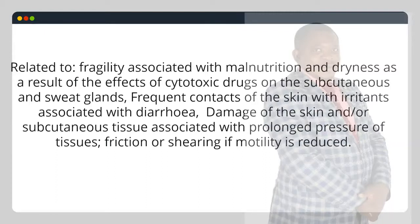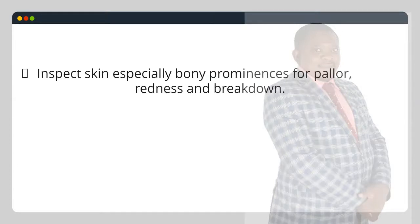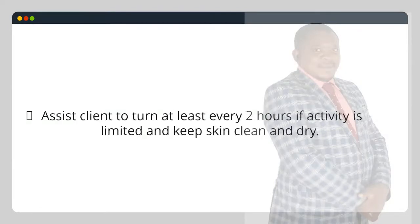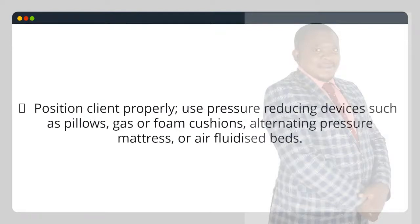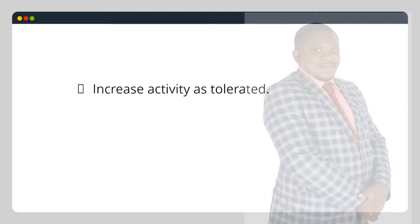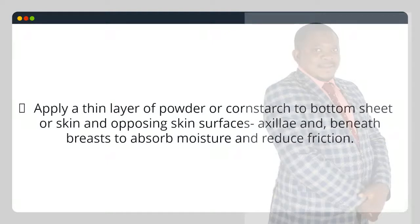Also related to frequent contact of the skin with irritants associated with diarrhea, damage of skin and/or subcutaneous tissue associated with prolonged pressure, friction or shearing if mobility is reduced. The nurse should instruct the patient to: inspect skin especially bony prominences for pallor, redness and breakdown. To prevent skin breakdown: assist the client to turn at least every 2 hours if activity is limited and keep skin clean and dry; position the client properly; use pressure reducing devices such as pillows, gel or foam cushions, alternating pressure mattress or air-fluidized beds; increase activity as tolerated; apply a thin layer of powder or cornstarch to the bottom sheet or skin and opposing skin surfaces to absorb moisture and reduce friction.